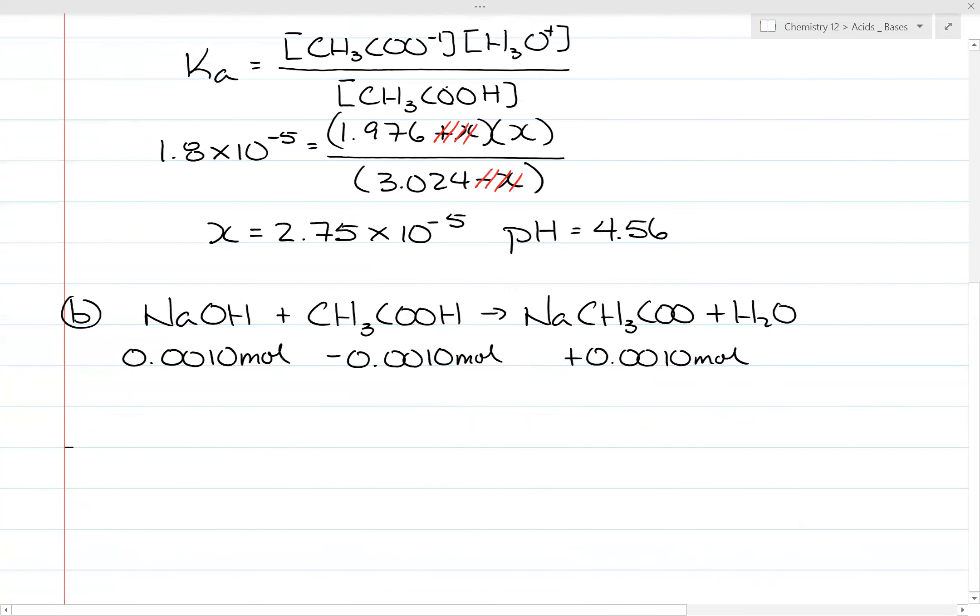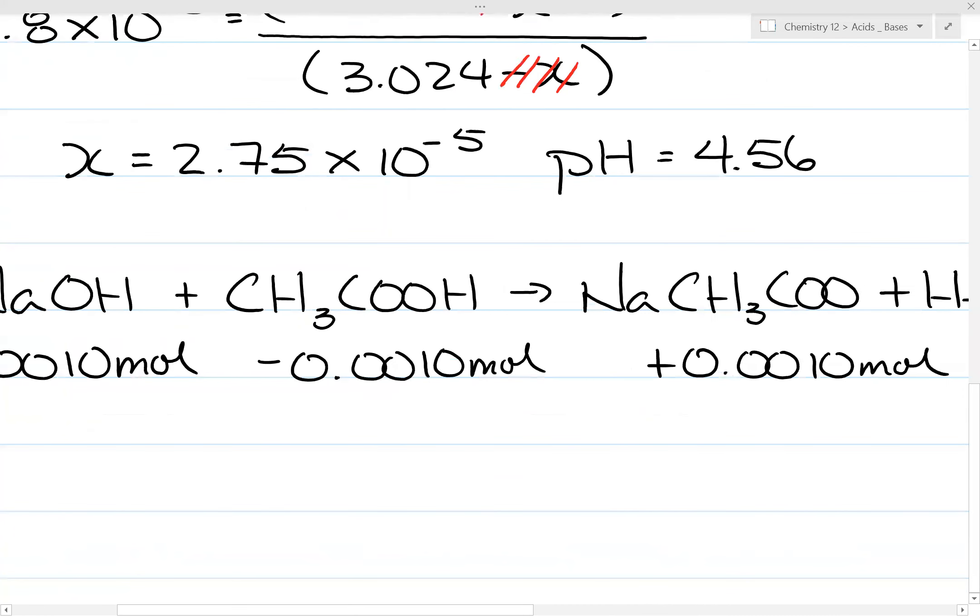So in this case, so for B, the sodium hydroxide will react with the acid in the buffer solution to produce sodium acetate and water. So if this is 0.0010 moles, this will go down by 0.0010 mole. And this will go up by 0.0010 mole because it's produced. Now, so in this case, since it went down by 0.0010 moles, if we divide it by the volume of 0.620 liters, so we have 0.001 divided by 0.62. So I have 1.61 times 10 to the negative 3 molarity. That's minus. This side will go up by 1.61 times 10 to the negative 3 molarity.